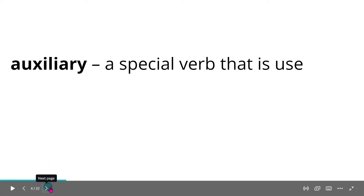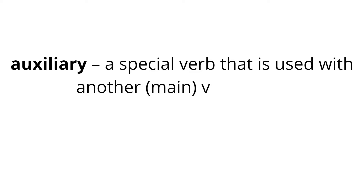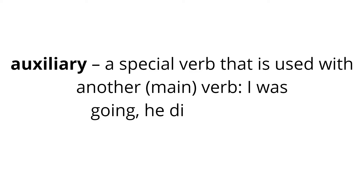Auxiliary verb: a special verb that is used with another main verb. Examples: 'I was going.' 'He didn't come.'